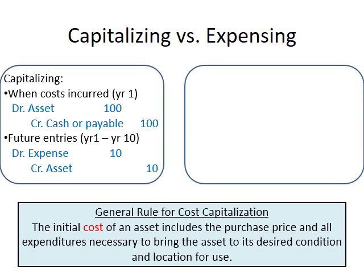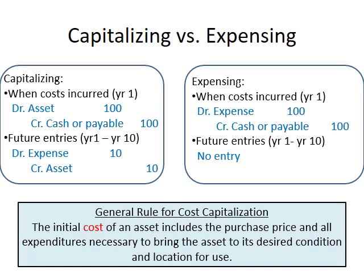The second case: in year one you incur a cost of $100, but you can only benefit from it in year one. According to the matching principle, since we can only benefit in year one, we should recognize the entire amount as expense in year one. The journal entry is: debit expense $100 and credit cash or payable $100. In future years, because we no longer benefit from this cost, there is no journal entry recorded.